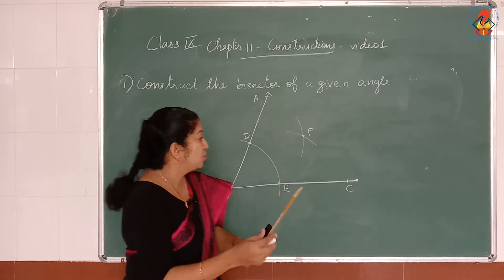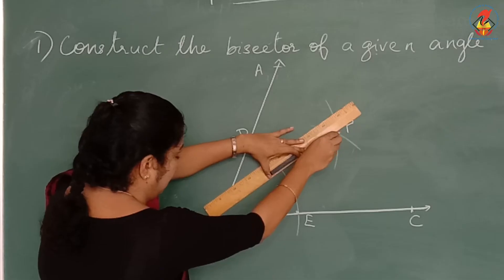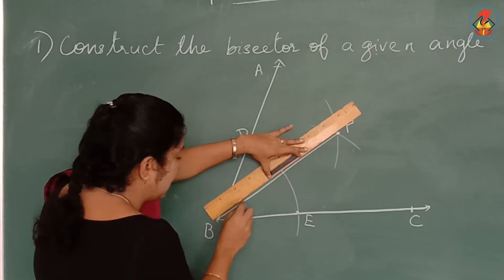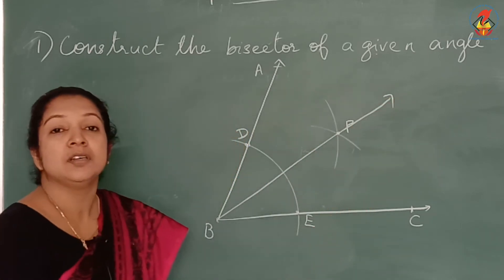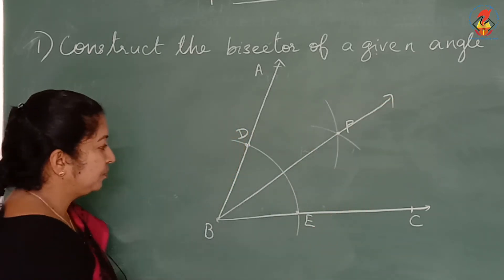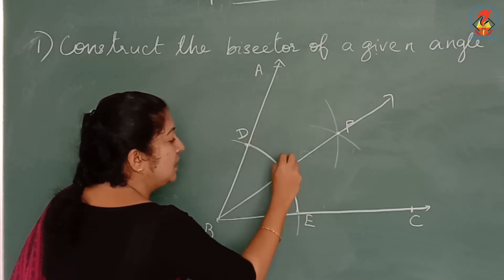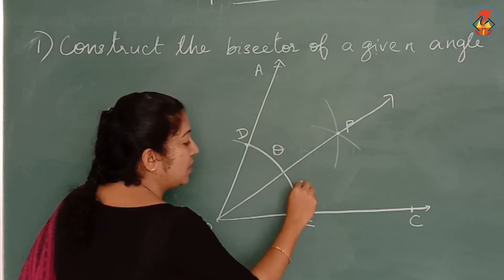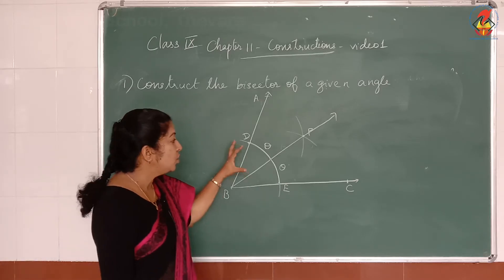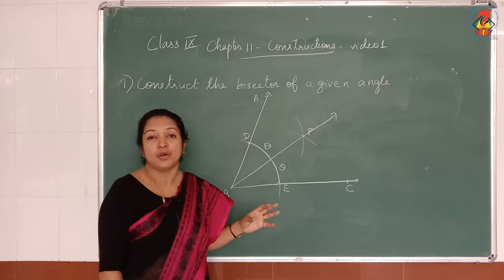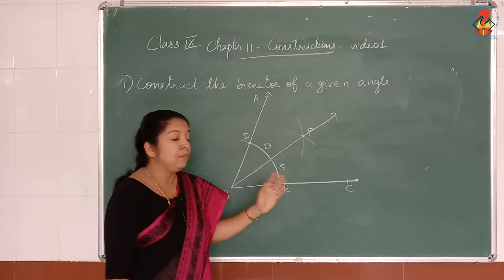Then, what you have to do is join B and P. Extend this. This is the required bisector. So if you measure, you can see that these two angles are equal. So this is the angle bisector of this given angle, angle ABC.